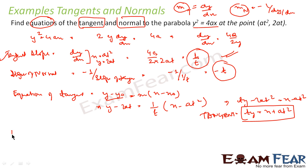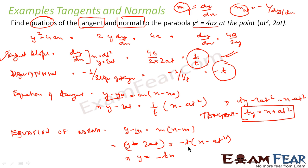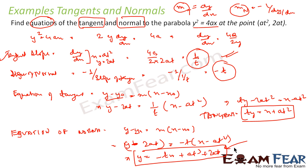Let's do the same thing for the normal. We use the same general formula y − y₀ = m(x − x₀). Here y₀ is 2at, and the slope changes to −t. So: y − 2at = −t(x − at²), which gives y = −tx + 2at + at³. So this is my equation of normal.